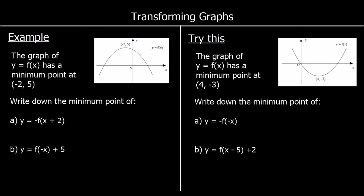Here's an example with two transformations — one for the x and one for the y. We have a graph with a minimum point of (-2, 5). For the transformation minus f of x plus 2: the change inside the bracket affects x — it says plus 2 so we subtract 2, giving x = -4. We also multiply y by negative 1, so y becomes -5. The new minimum point is (-4, -5).